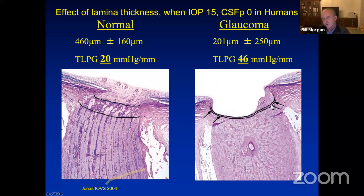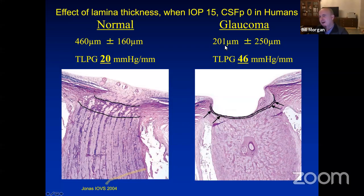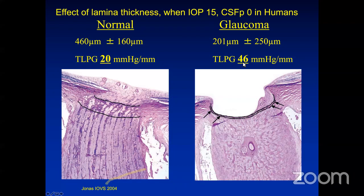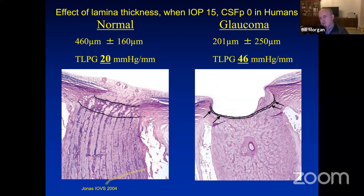In glaucoma, however, the lamina was thinned and compressed down to about 200 microns—about half—which means the pressure drop or gradient fell across a much shorter distance. Taking a conservative approach, in the normal human the gradient would be about 20 millimetres of mercury per millimetre, but in the typical severe glaucoma patient it rises to about 46 millimetres of mercury per millimetre, even when the intraocular pressure was just 15.